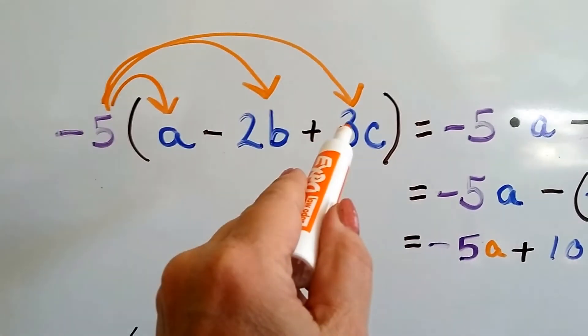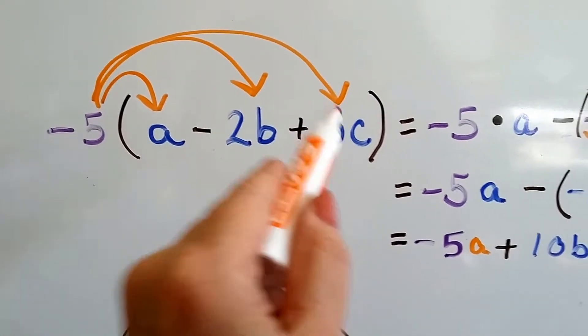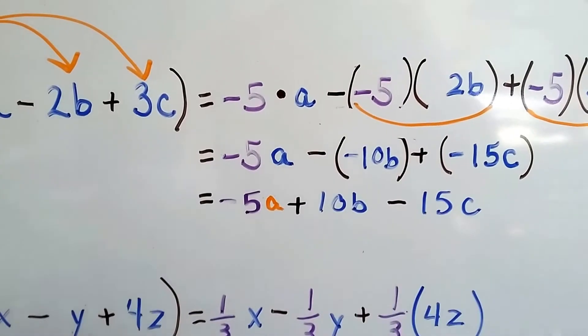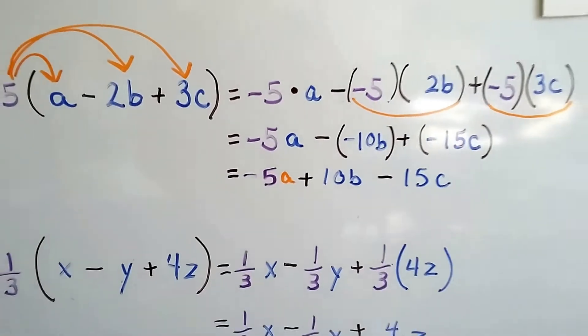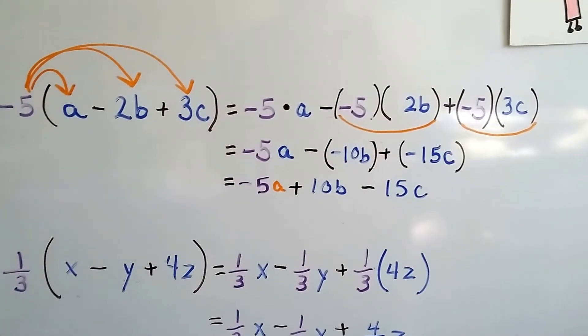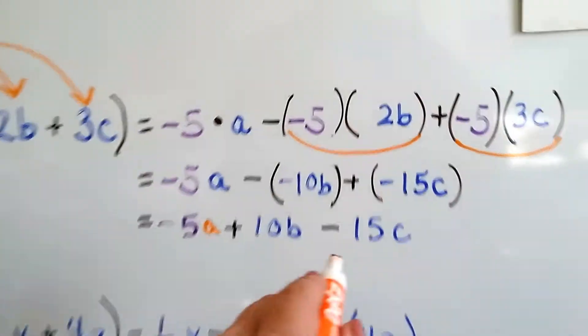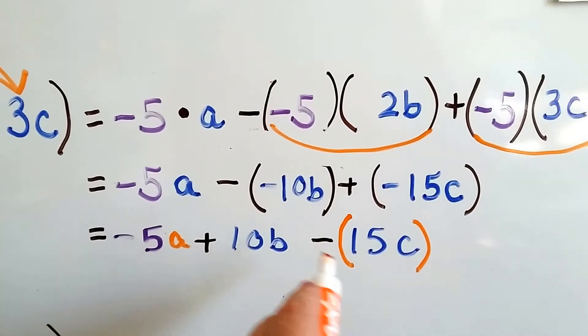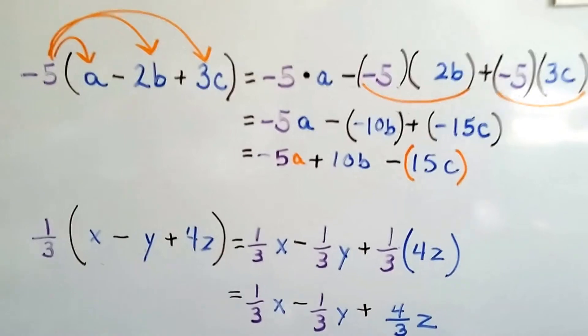Now look at this one, negative 5 times 3. Negative 5 times 3 is negative 15. And there's our minus 15. When we're adding a negative, we're taking away a positive. You can look at it like this is a separate one. When you add a negative, you're taking away a positive.